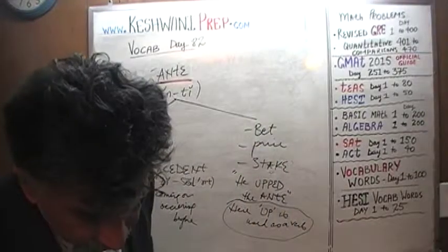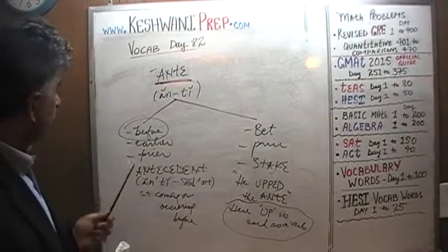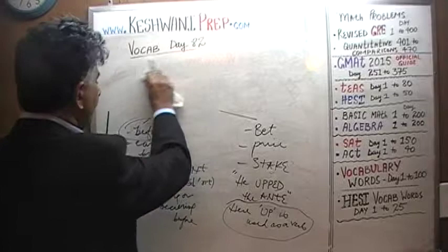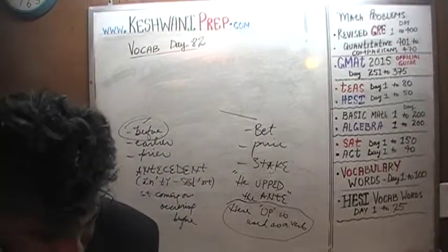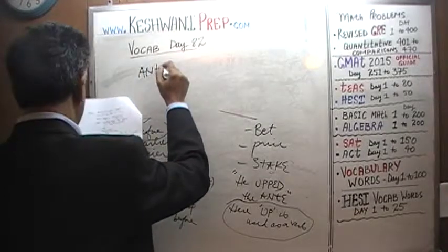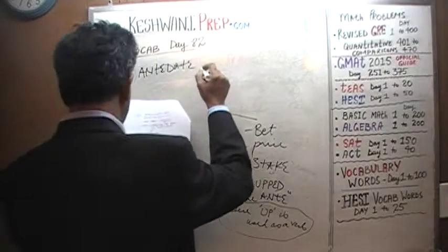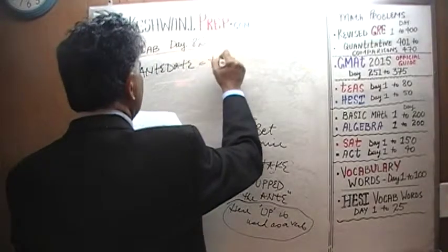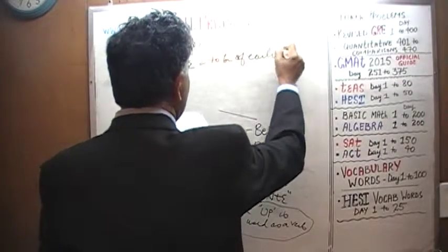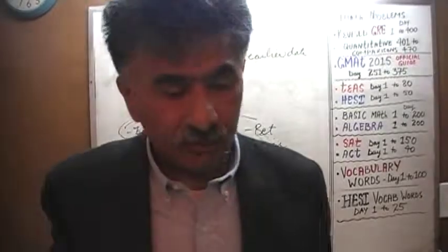Let's learn two more words to do with the meaning 'before.' First: 'antedate,' which means to be of an earlier date. Simple — 'ante' as in before, and 'date.' Very simple.